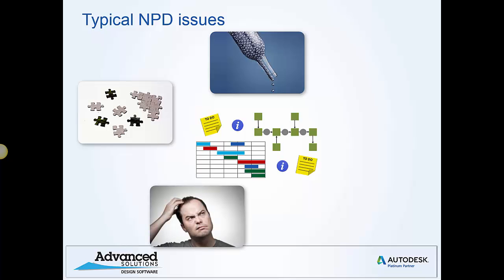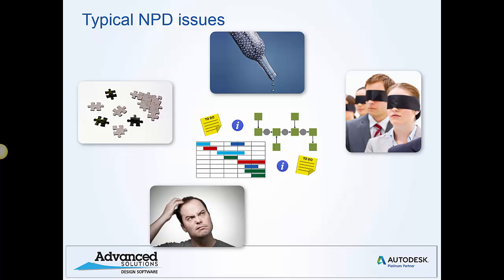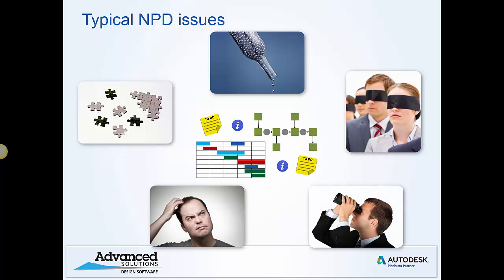Often a lack of understanding of what the process looks like and what tasks people need to complete causes problems. People are sometimes unaware that they have a task to do because they're not informed well enough of the status of the process or the overall project plan. Finally, one of the biggest time wasters is just trying to find information — often found in isolated silos across the company on hard drives, network drives, or in documents — and once found, people have to spend more time verifying that it's correct and up to date.